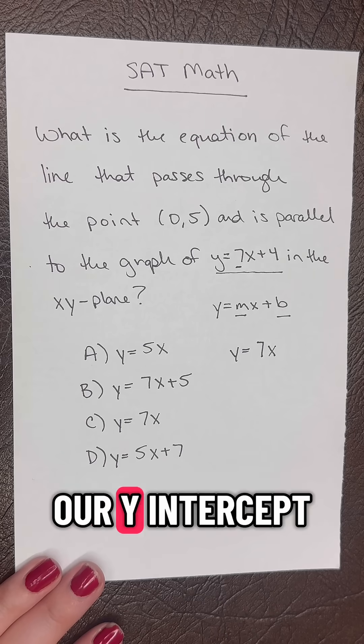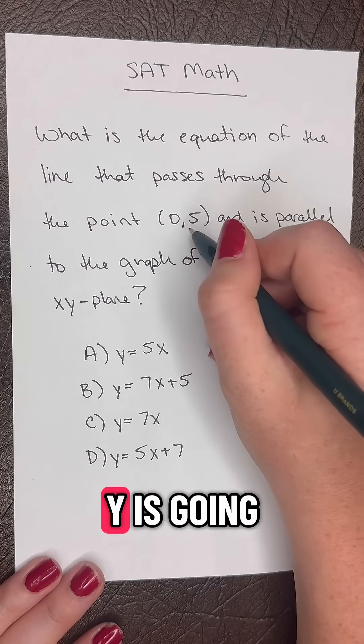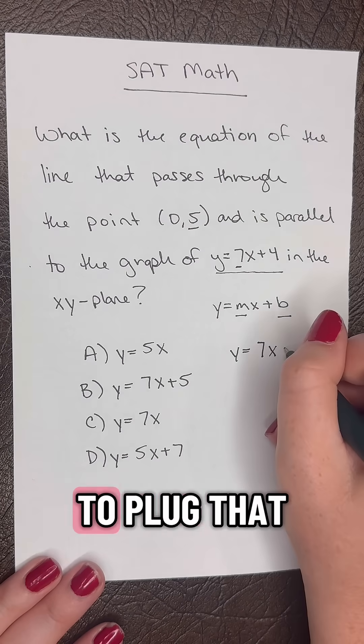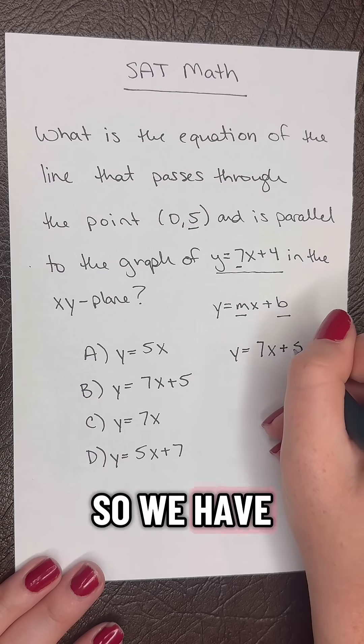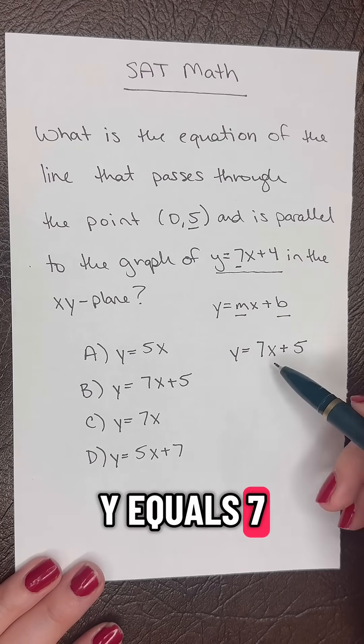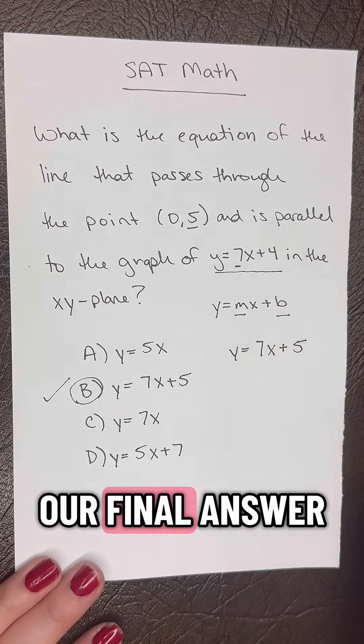Then we need to think about our y-intercept. Here we know that when x is 0, y is going to be 5. So that's going to be our y-intercept. We're going to plug that in for b, so we have plus 5. Our equation is y = 7x + 5, and B is going to be our final answer.